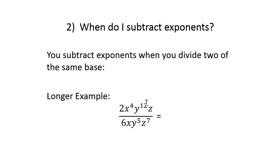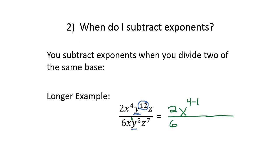Now let's take a look at a slightly more complicated example. Suppose we have two x to the fourth y to the twelfth z, over six x y to the fifth z to the seventh. We subtract exponents one letter at a time. X to the fourth over x to the first gives x to the four minus one, or three. Next, y to the twelfth and y to the fifth — matching up the same bases — we subtract twelve minus five.